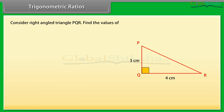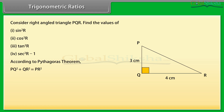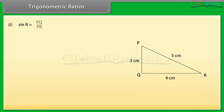Consider right angled triangle PQR. Find the values of sin²R, cos²R, tan²R, and sec²R minus 1. According to Pythagoras theorem, PQ² plus QR² equals PR². By substituting the values, we get 3² plus 4² equals PR². By calculating, we get PR equals square root of 25, which is 5 cm. Now, sin R equals PQ upon PR, which equals 3 upon 5. Sin²R equals (3 upon 5)², which is 9 upon 25.